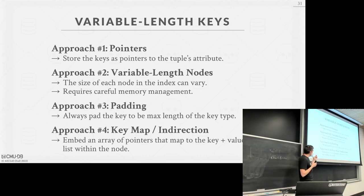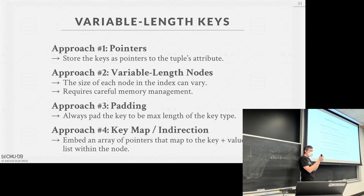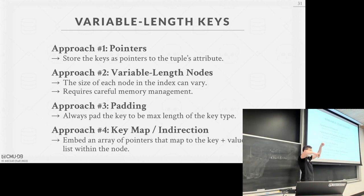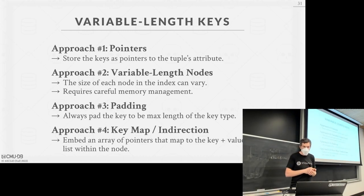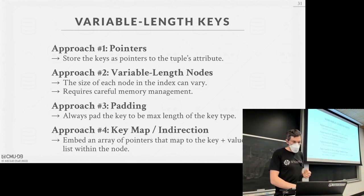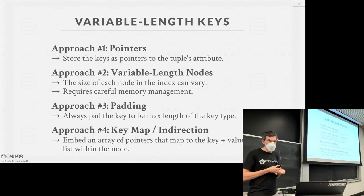The most common alternative is key map indirection: within the page itself you have an internal data structure where the key is represented by a fixed-length integer, and an indirection layer maps those to the actual variable-length keys within the node, with overflow if needed. For project two, we'll assume all keys are fixed-length integers, which makes things much easier.